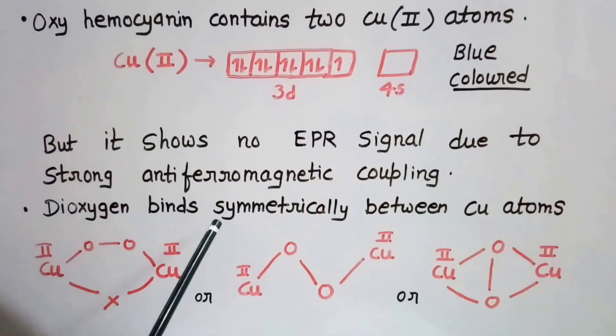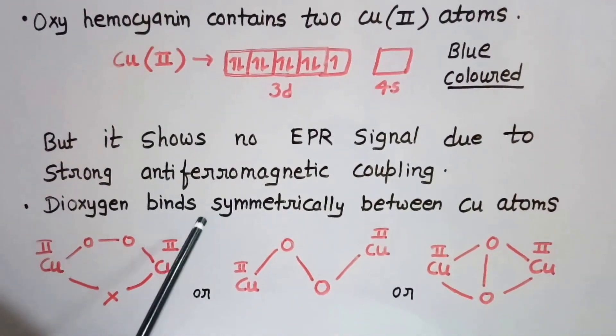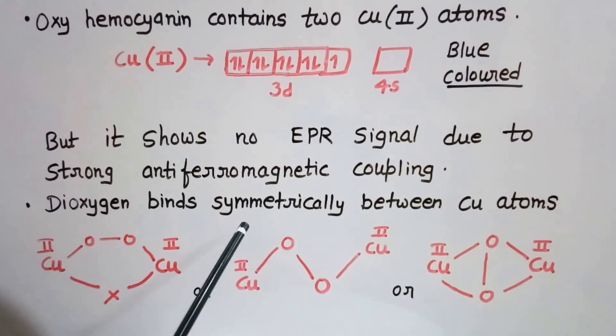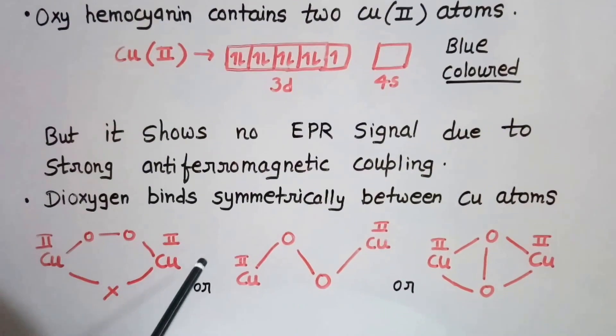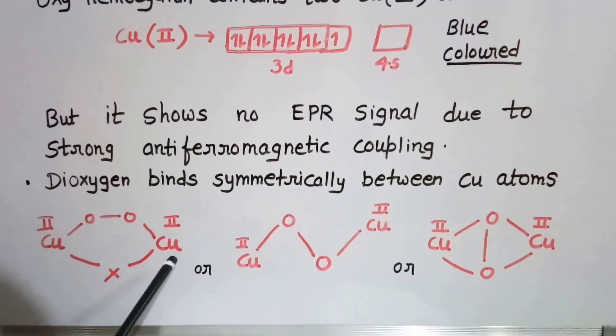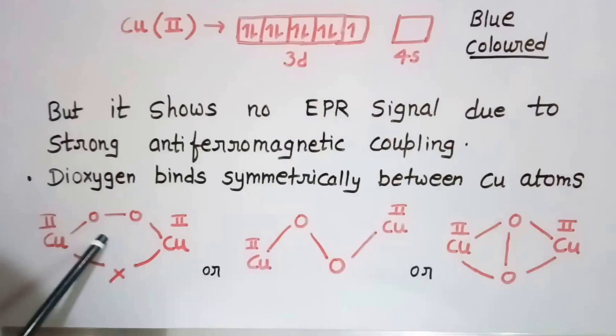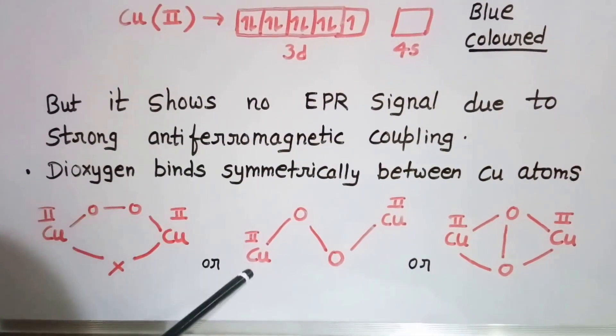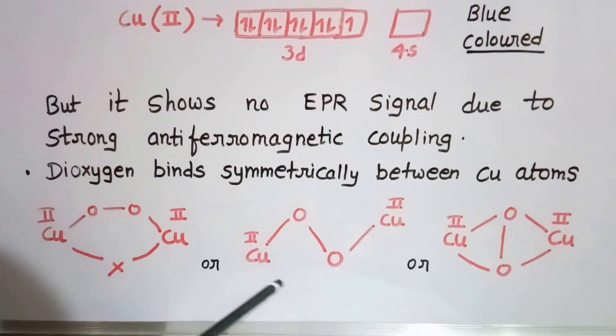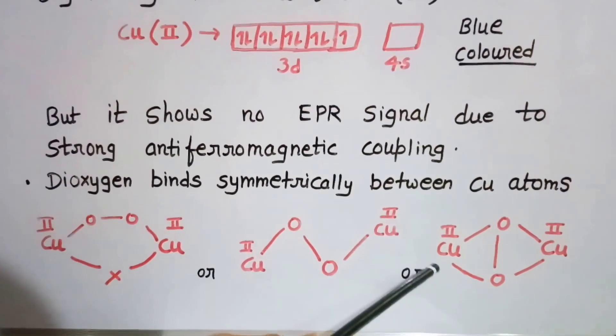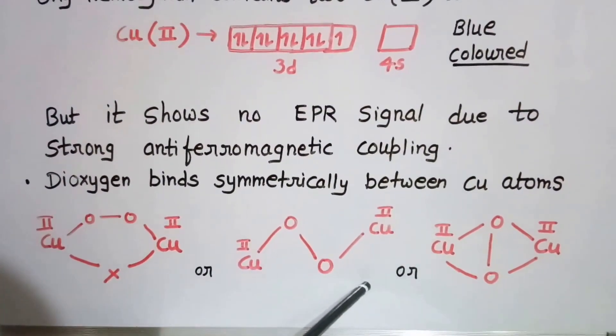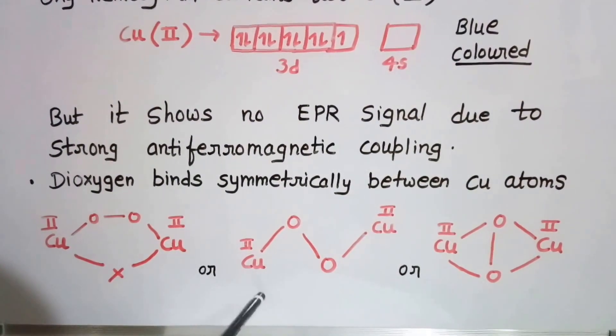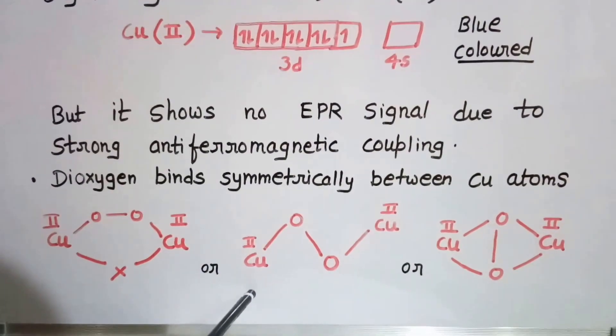Regarding the binding of dioxygen: dioxygen binds symmetrically between two copper atoms. Its binding may be of different types - it may take this type of structure, or this type, or this type. Any type of binding can be found in hemocyanin. This is all about the structure of hemocyanin and its binding.